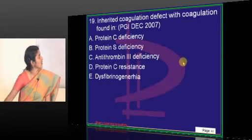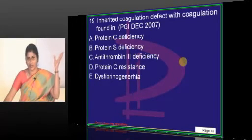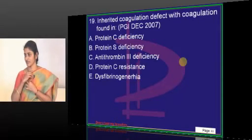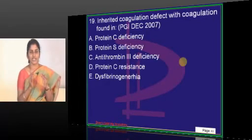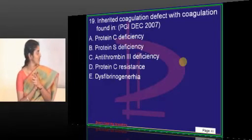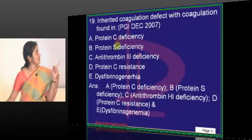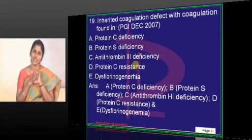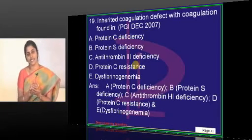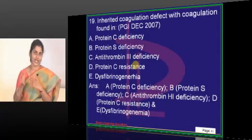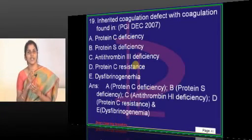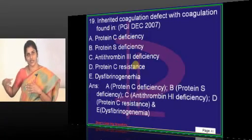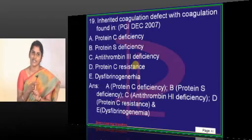Inherited coagulation defect - the question is: which one of the following is the inherited coagulation defect? The answer is all of them: protein C deficiency, protein S deficiency, antithrombin III deficiency, protein C resistance, dysfibrinogenemia, afibrinogenemia, hypofibrinogenemia - all these are inherited disorders of coagulation. Even homocystinemia can be congenital or acquired. What is the most common inherited cause of coagulopathy? The answer is factor V Leiden mutation. Then comes prothrombin gene mutation, then antithrombin III deficiency. The most common cause is factor V Leiden gene mutation.